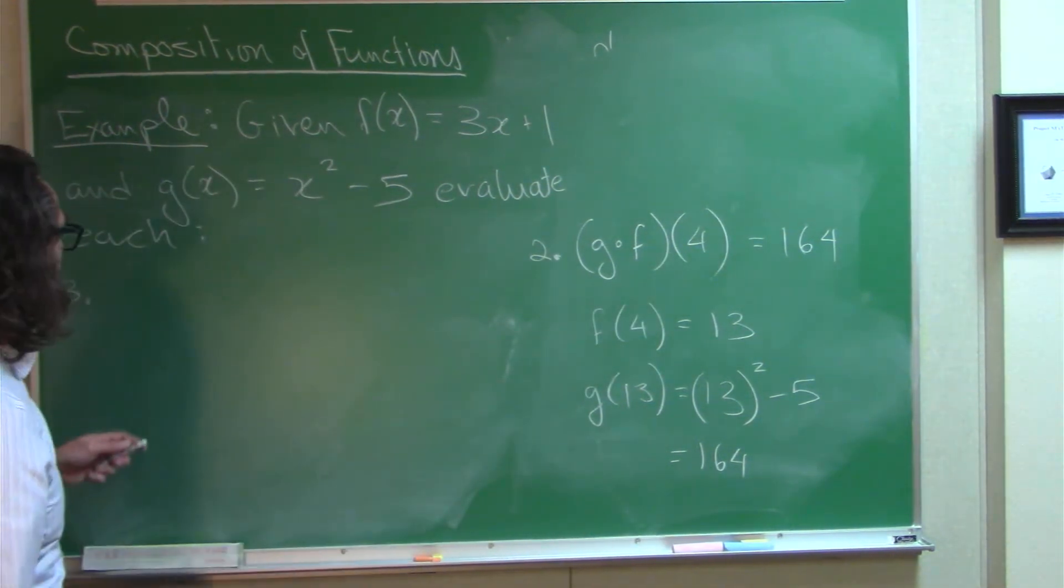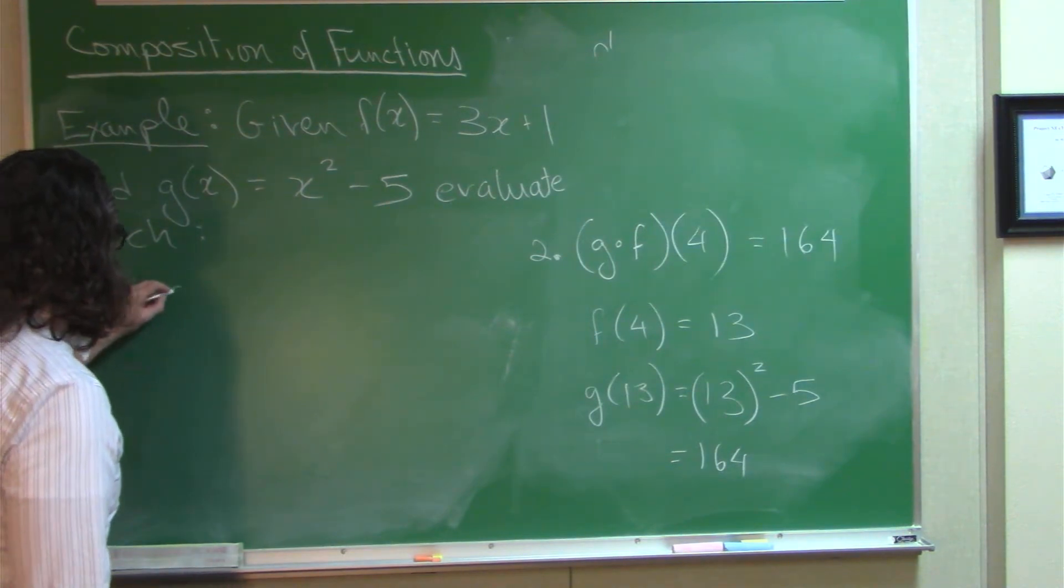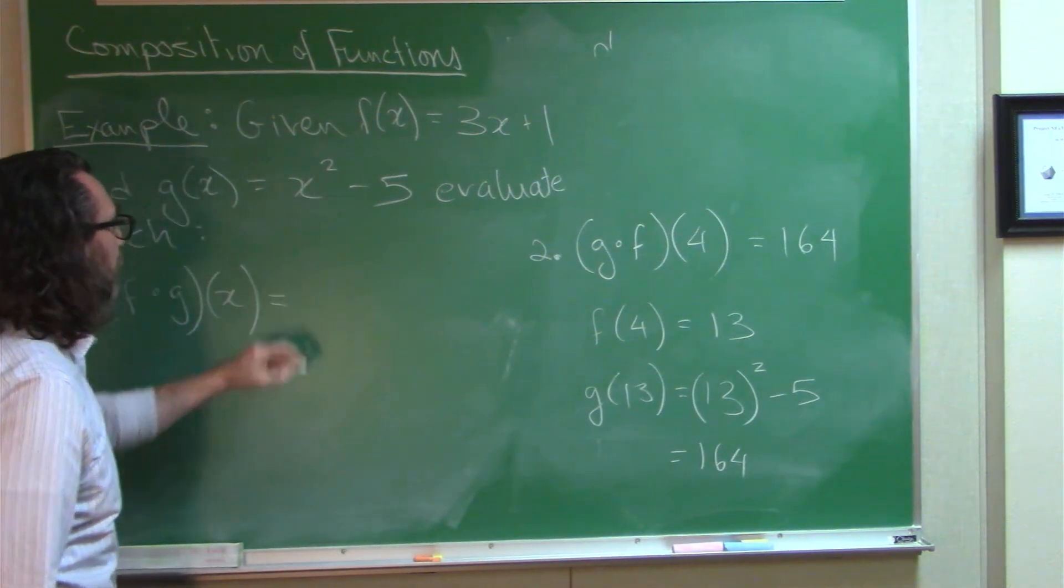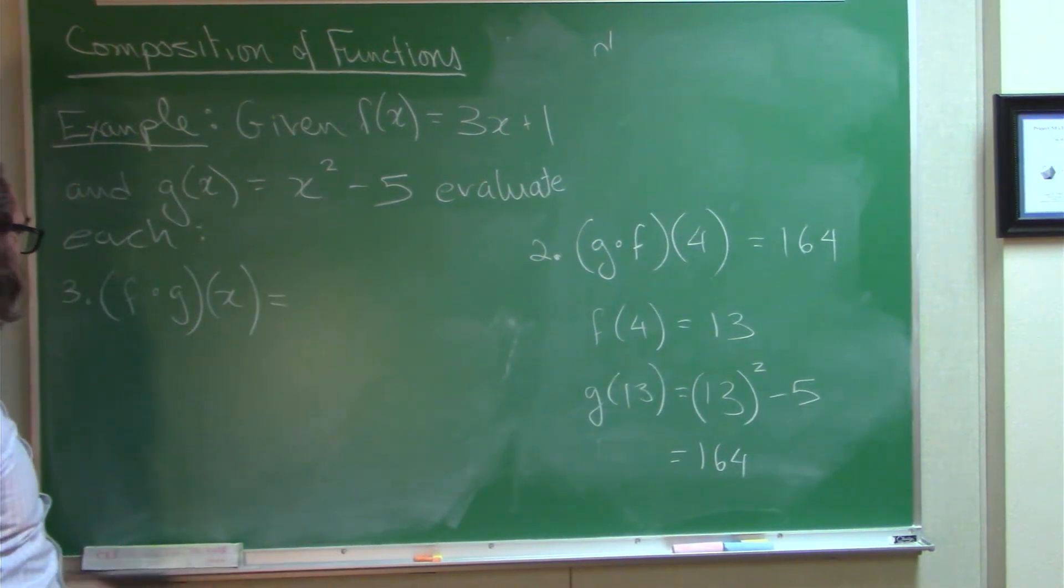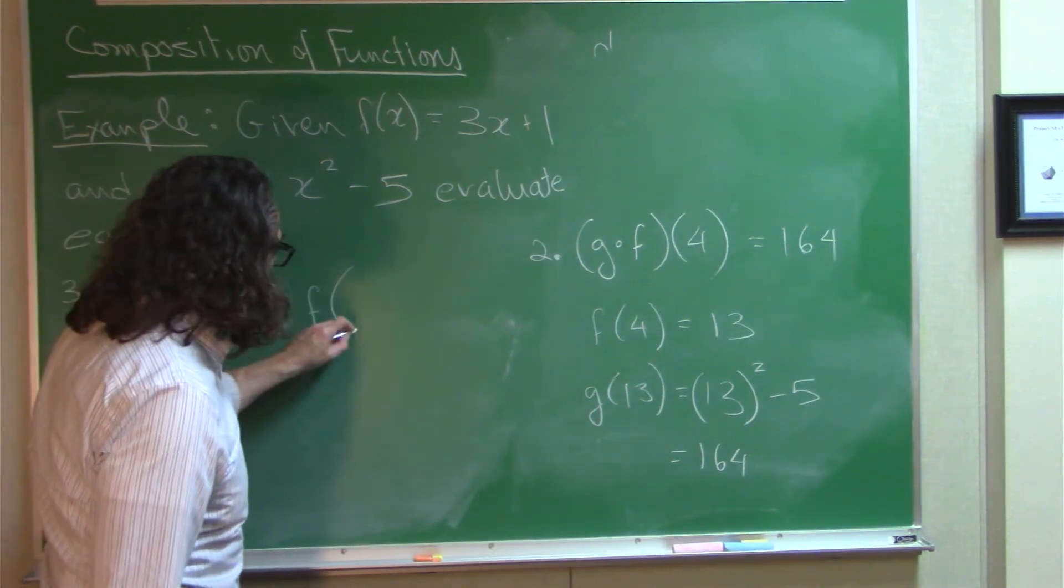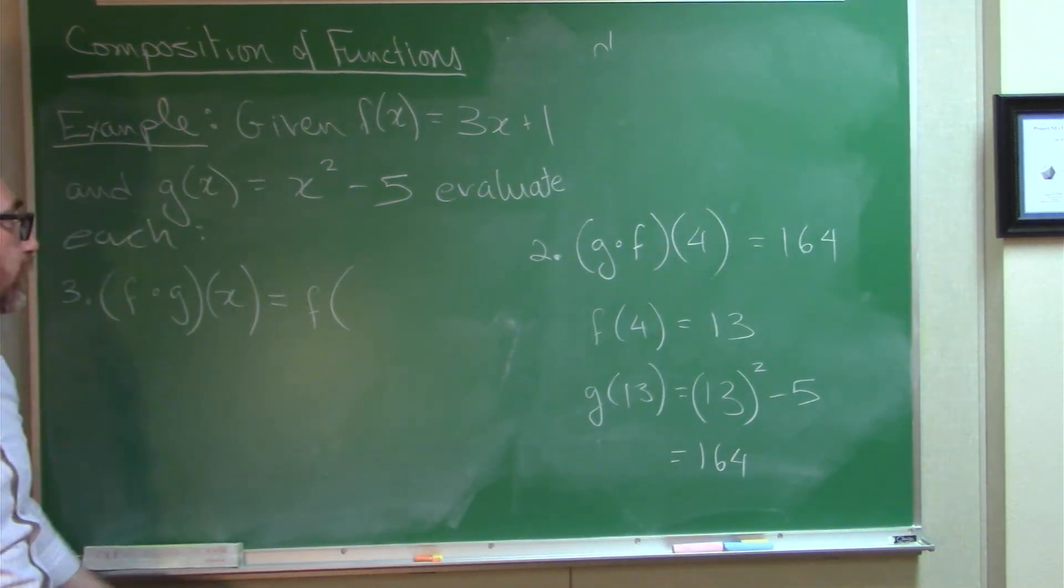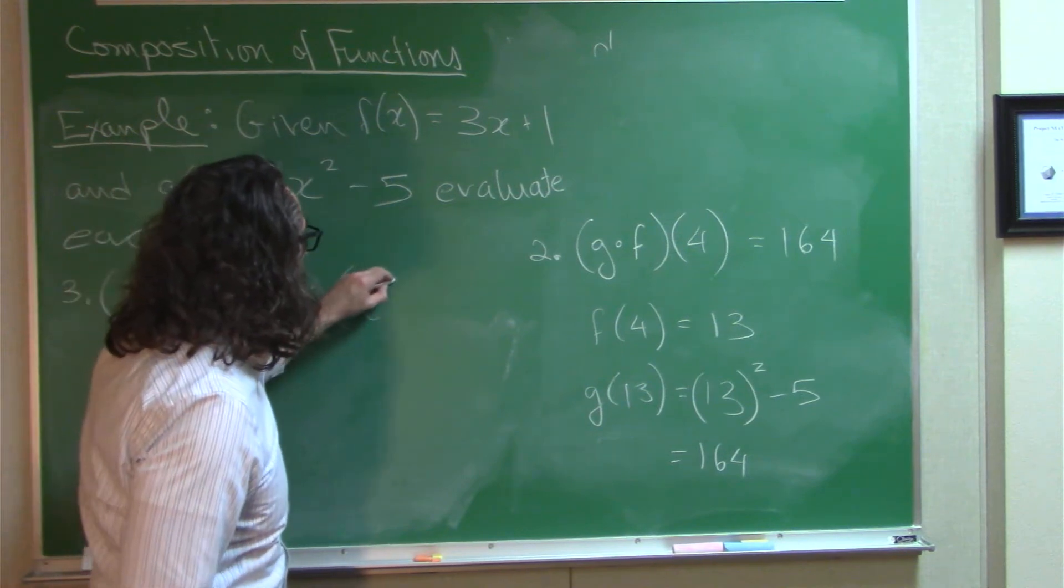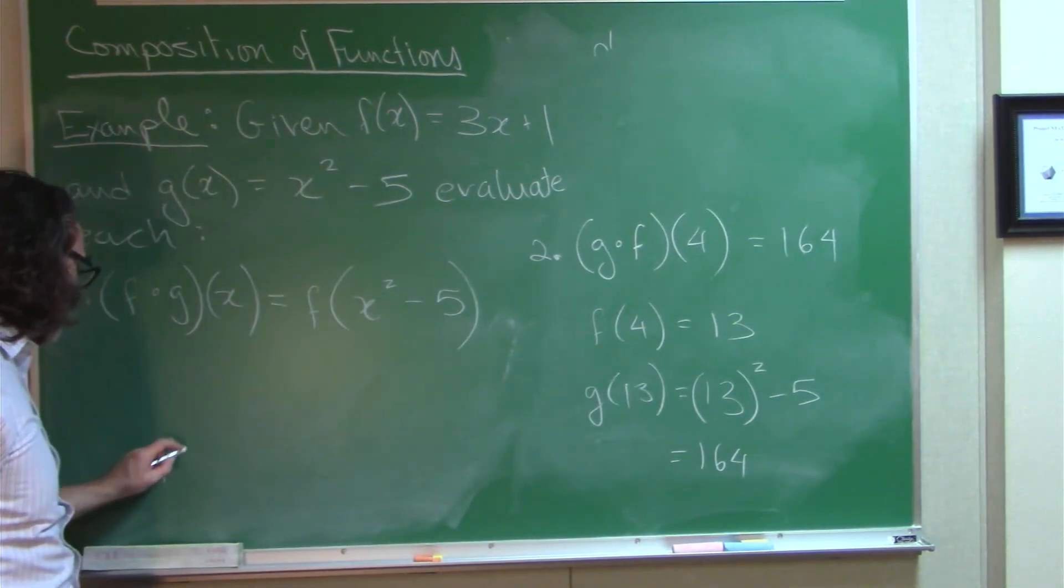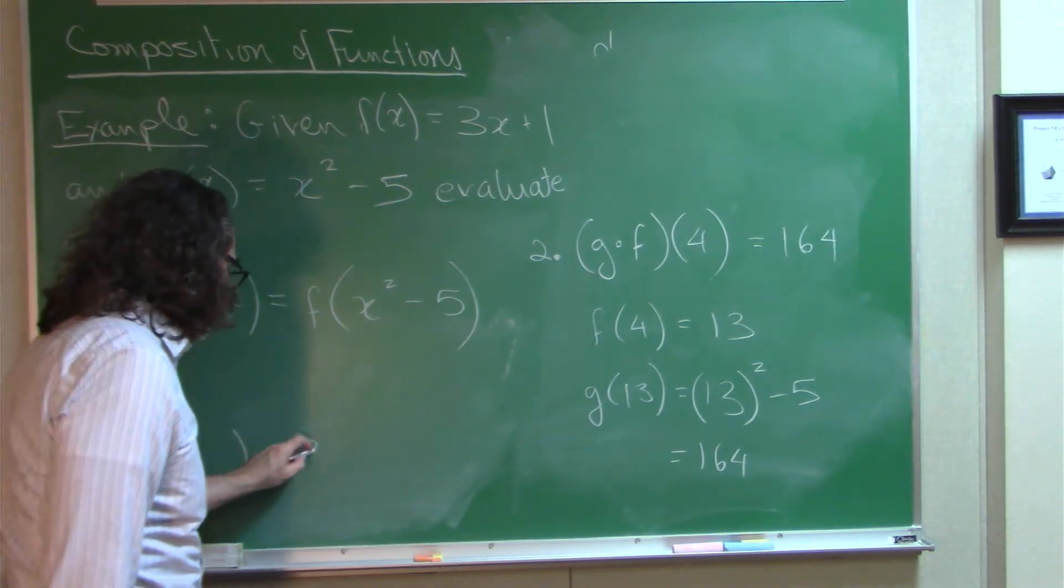You can also play this game with variables. You could do F of G of X. So, in this case, G of X is going to be used as the input to F of X. Now, G of X is X squared minus 5.